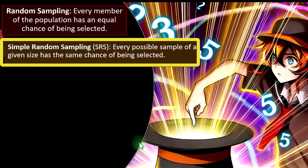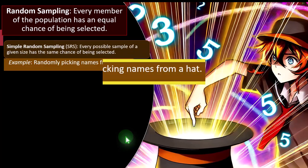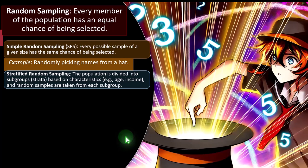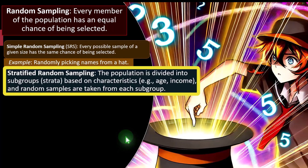Simple Random Sampling, sometimes called SRS, means every possible sample of a given size has the same chance of being selected — complete randomness. An example is randomly picking names from a hat, as long as you shuffle well and pick randomly.